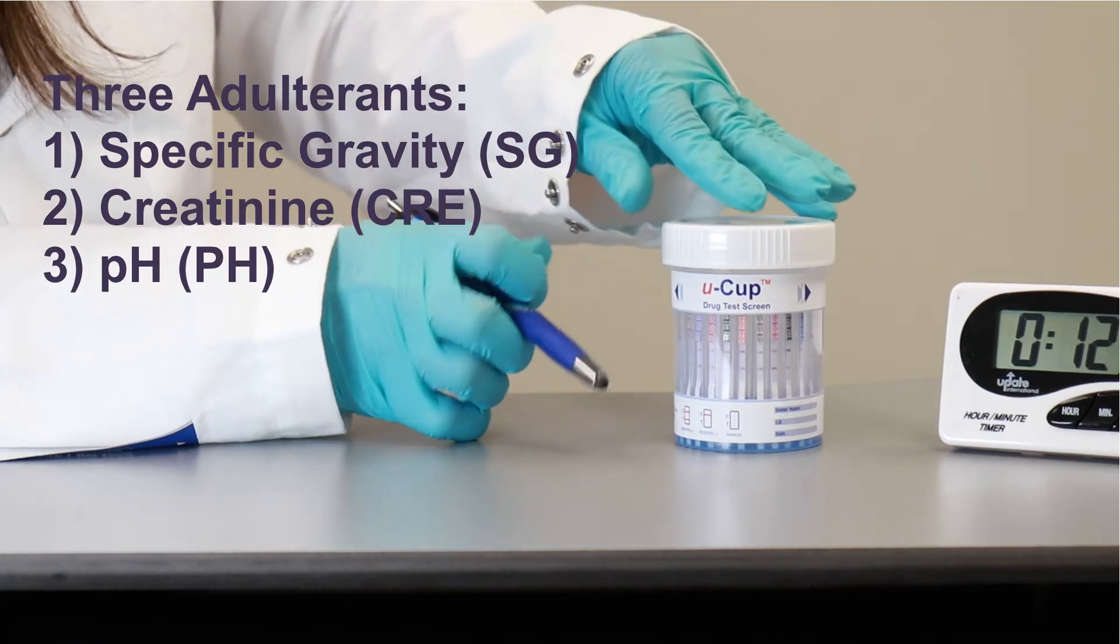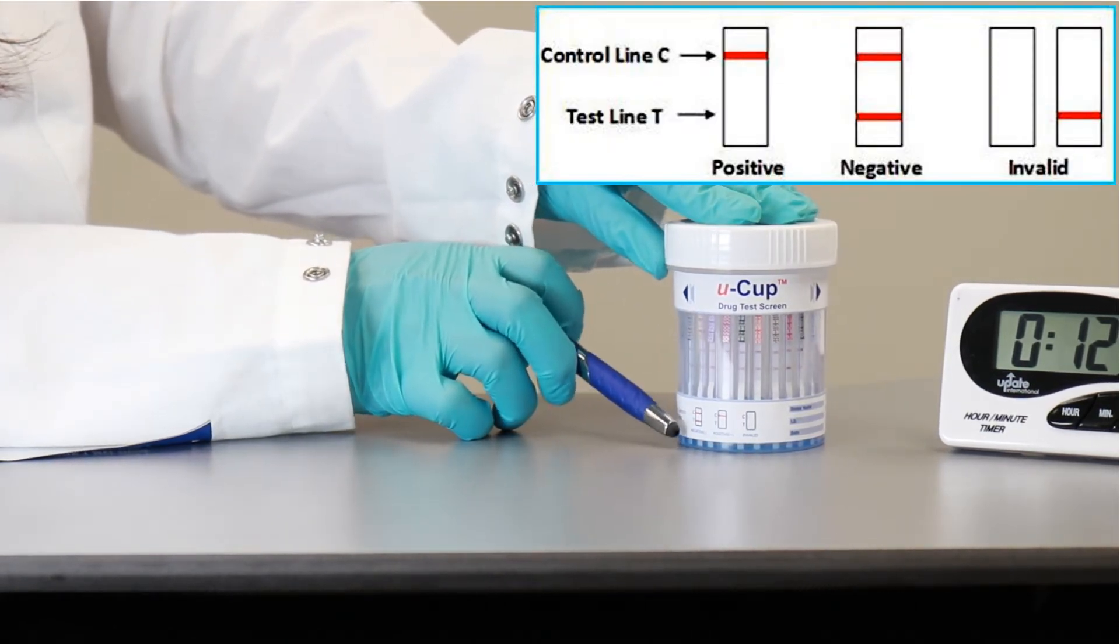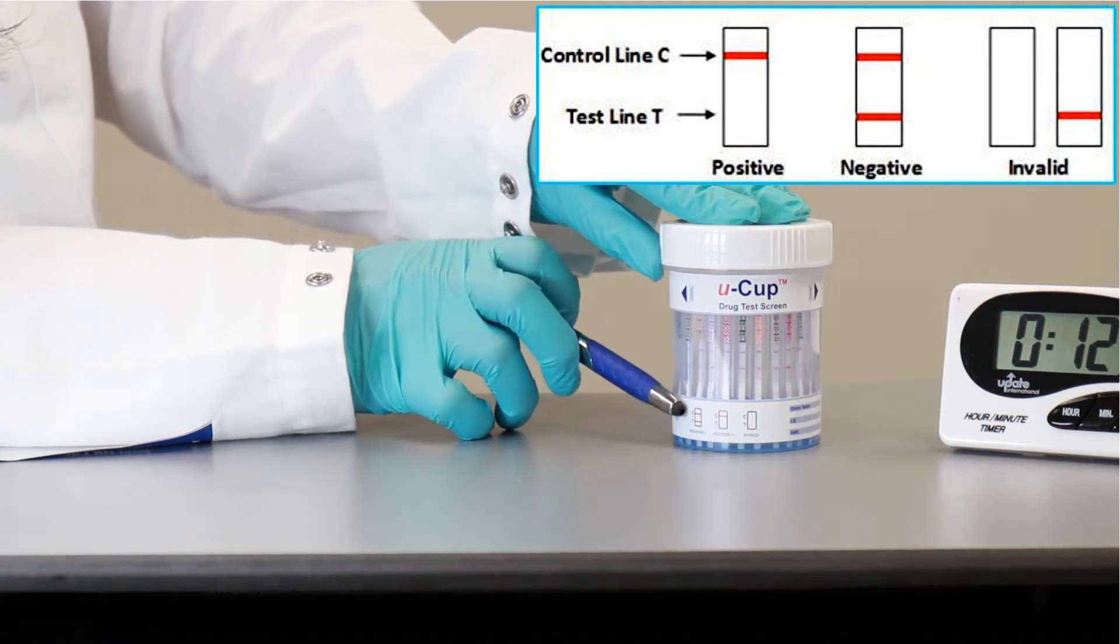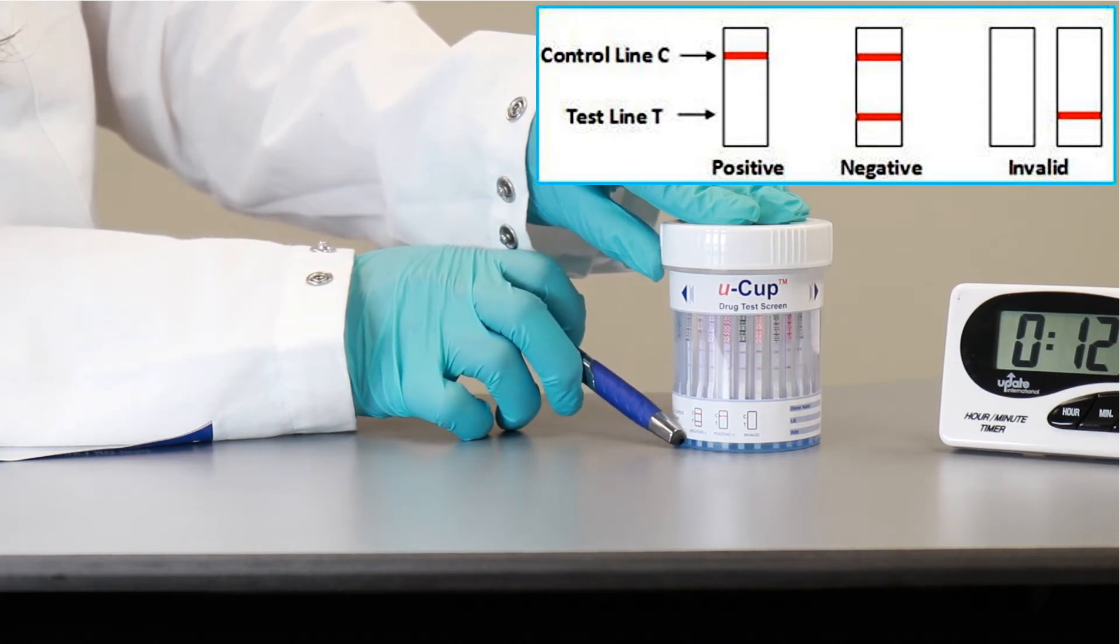So I can see here in the test line window, you have a negative where you have two lines, a test line and a control line. So if both of the control and test lines are present, the result is negative.